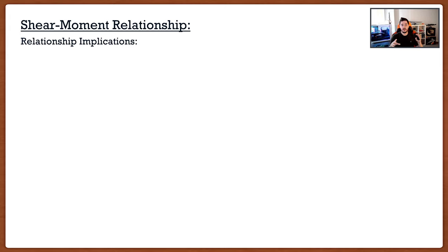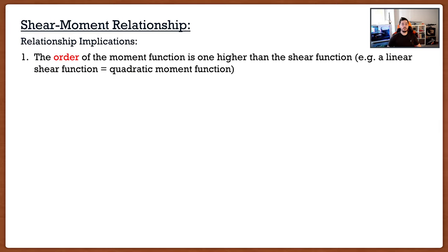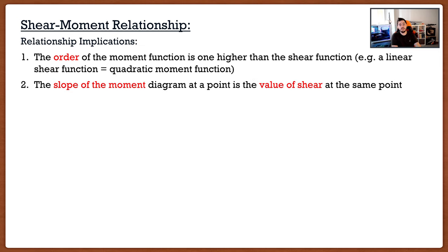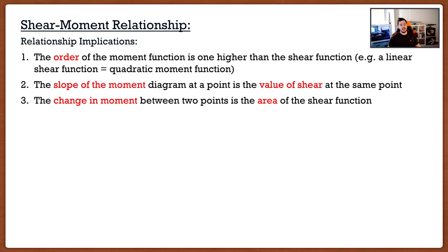A brief recap: we found shear by integrating the distributed load, and now we find moment by integrating shear. That's it. This gives us the same three implications as before, but now for shear and moment: the order of our moment function is one higher than shear — if shear is linear, moment is quadratic; if shear is quadratic, moment is cubic. The slope of the moment diagram at a point equals the value of shear at that same point. And the change in moment between two points equals the area of the shear diagram.